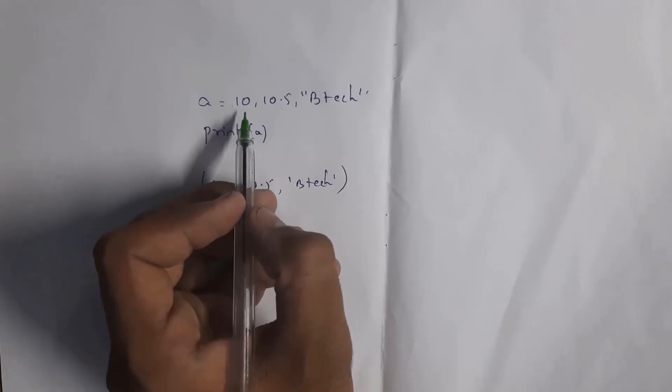If you don't use any brackets, by default it is considered as tuple. Whenever you run this code you will get output 10, 10.5, 'btec' in normal brackets.